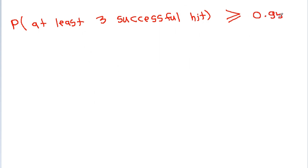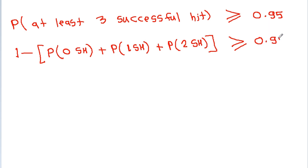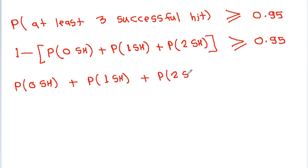The probability of at least 3 successful hits equals 1 minus the probability of 0 successful hits plus probability of 1 successful hit plus probability of 2 successful hits, and this should be greater than or equal to 0.95. Therefore, the probability of 0 successful hits plus probability of 1 successful hit plus probability of 2 successful hits should be less than or equal to 1 minus 0.95, which is 0.05.